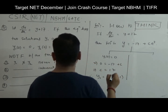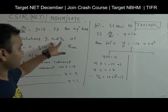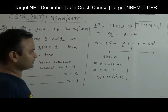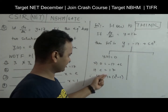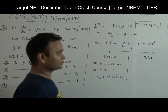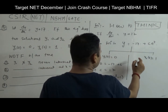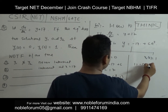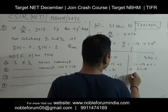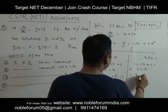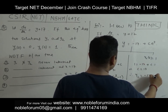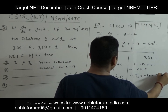For y2: if y2(0) = 1, then substituting x = 0 gives 1 = −17 + C·e^0, so C = 18. Therefore y2 = −17 + 18·e^x.